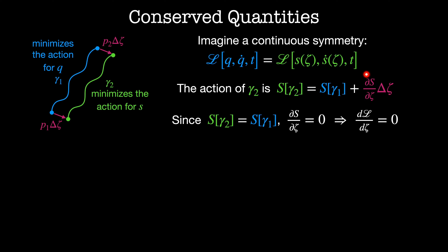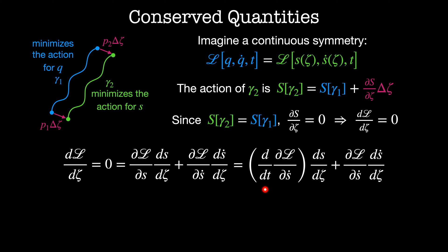And this term dS by dZeta must be equal to zero. Or equivalently, the total derivative of the Lagrangian with respect to zeta must be equal to zero. We can expand the total derivative of the Lagrangian as dL by dS times dS by dZeta plus dL by dS dot times dS dot by dZeta. Then we'll use the definition of the Euler-Lagrange equation to rewrite dL by dS. That gives us d by dt dL by dS dot times dS by dZeta plus dL by dS dot times dS dot by dZeta.